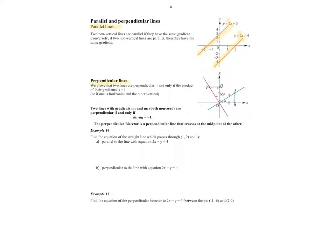Perpendicular lines, on the other hand, the product of their gradients is negative 1. So if M1 and M2 are the gradients of the two lines that we're talking about, M1 times M2 is equal to negative 1.